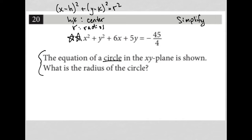So my job is to convert this equation into this form here. So I'm going to take my equation x² + y² + 6x + 5y = -45/4 and I'm going to do something called completing the square.